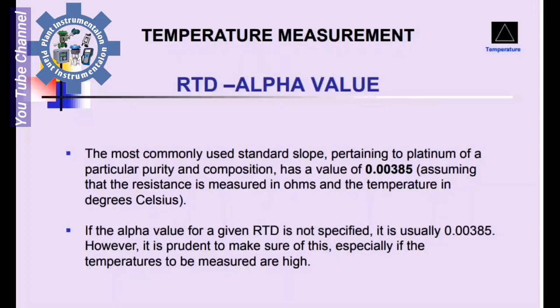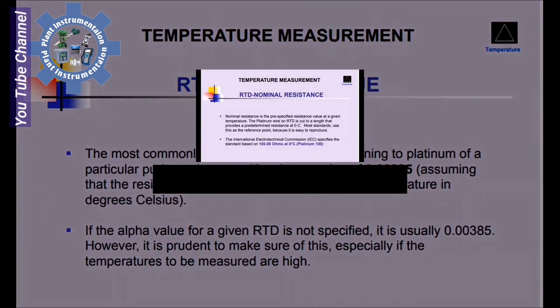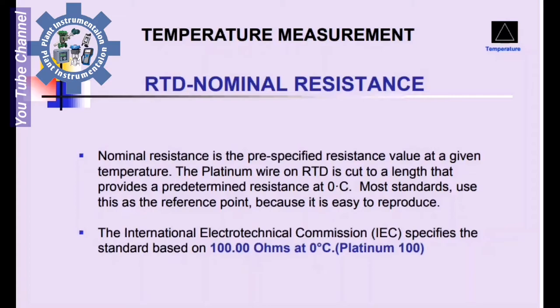If the alpha value for a given RTD is not specified, it is usually 0.00385. However, it is important to make sure of this, especially if the temperatures to be measured are high. Nominal resistance is the pre-specified resistance value at a given temperature. The Platinum wire on an RTD is cut to a length that provides a predetermined resistance at 0°C.